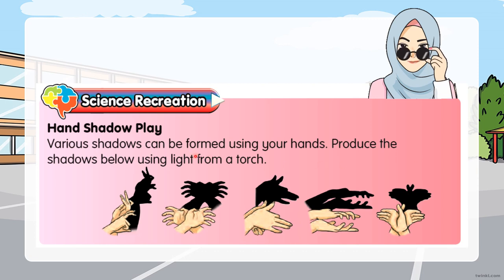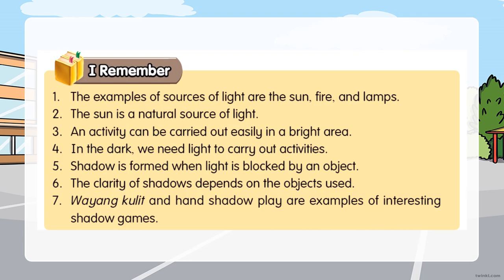This is a science recreation: hand shadow play. Various shadows can be formed using your hands — produce the shadows using light from a torch. You can try this at home. This activity is in your textbook — you can make several shapes, including animal shadow shapes, using your hand.